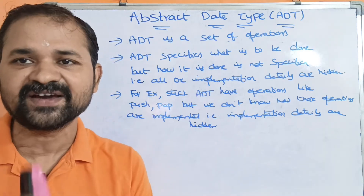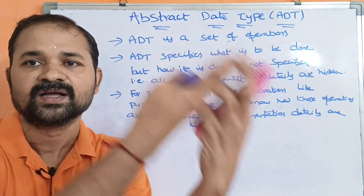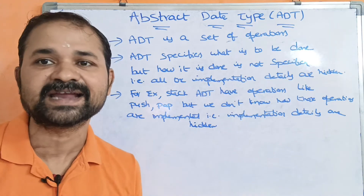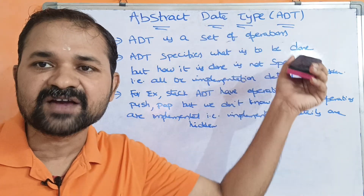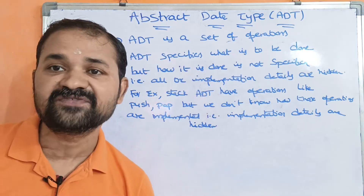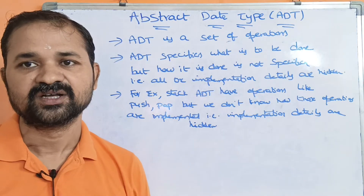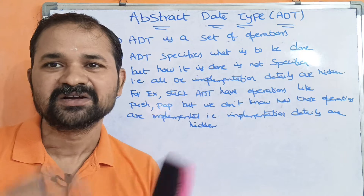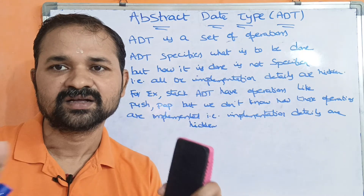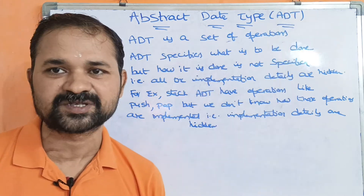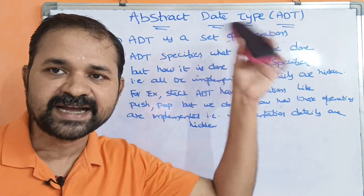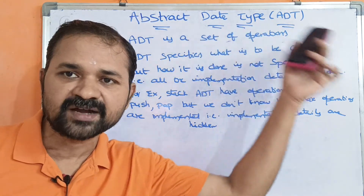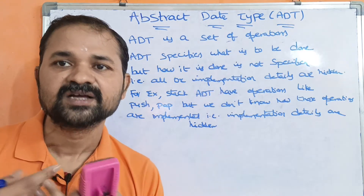Abstract data types are defined by the user. They are not built-in and not basic data types. So these are not real built-in data types — these data types are user-defined data types, defined by the user.